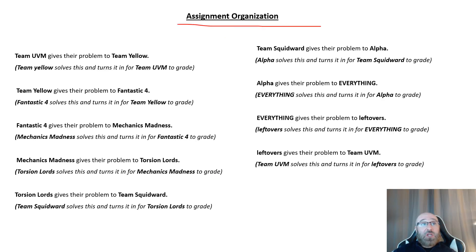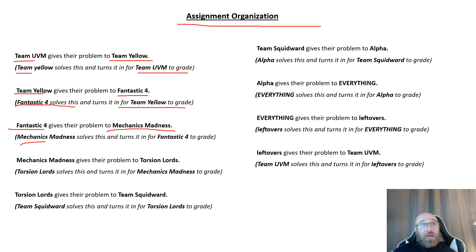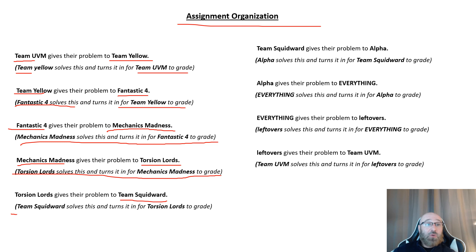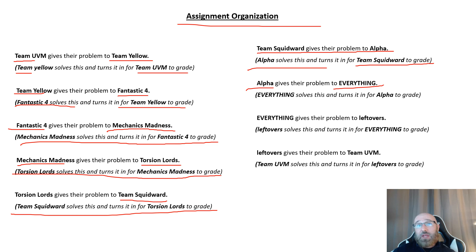Here is the assignment organization. Team UVM gives their problem to Team Yellow; Team Yellow solves it and turns it back into Team UVM to grade. Team Yellow gives their problem to Fantastic Four; Fantastic Four solves it and turns it in for Team Yellow to grade. Fantastic Four gives their problem to Mechanics Madness; Mechanics Madness solves it and turns it back into Fantastic Four to grade. Mechanics Madness gives their problem to Torsion Loads; Torsion Loads solves it and turns it back to Mechanics Madness to grade. Torsion Loads gives their problem to Team Squidward; Team Squidward solves it and turns it back into Torsion Loads to grade. Team Squidward gives their problem to Alpha; Alpha solves it and turns it back into Team Squidward to grade. Alpha gives their problem to Everything; Everything solves it and turns it back into Alpha to grade. Everything gives their problem to the Leftovers; Leftovers solves it and turns it back into Everything to grade.